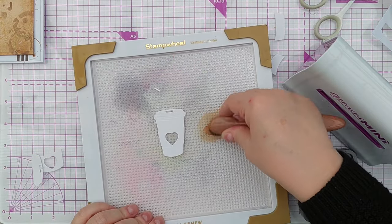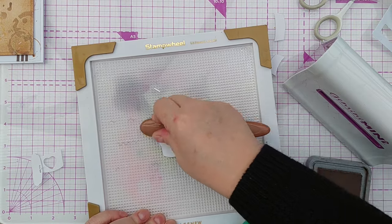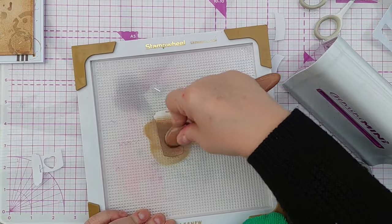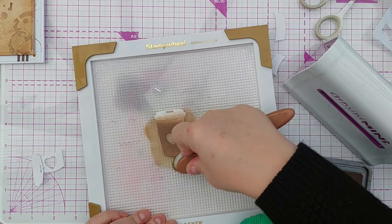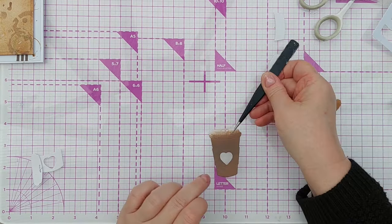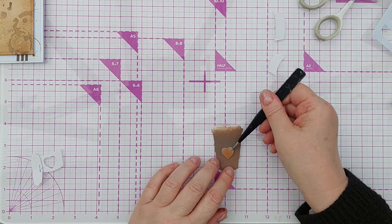But before I did that I colored my other die cut. So I used vintage photo on the little heart that goes in the middle of the cup and then walnut stain for the cup itself. Once I'd done that I popped a bit of double-sided tape behind the brown die cut and that allowed me to stick the heart back where it should be.